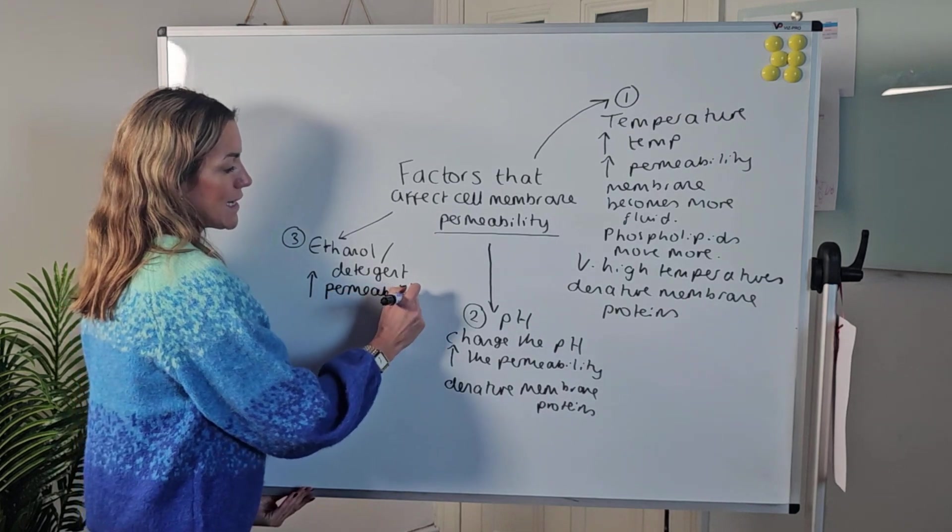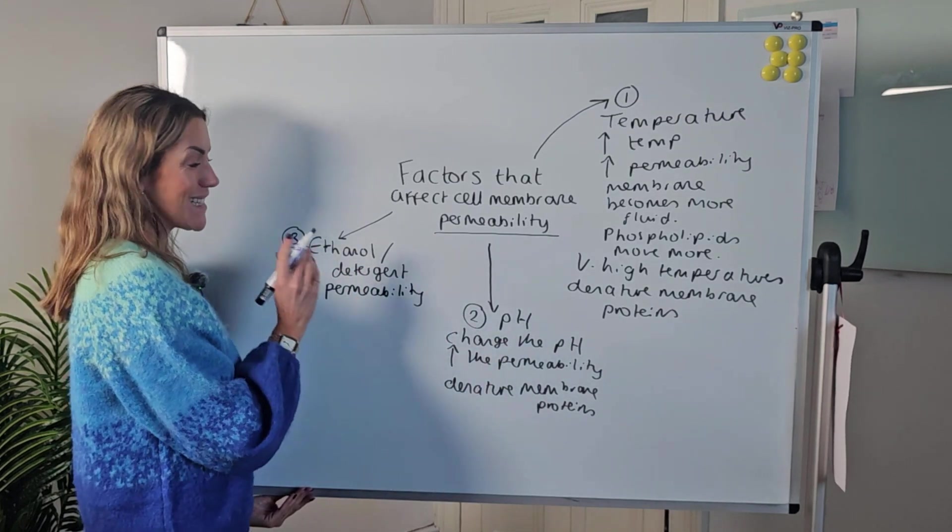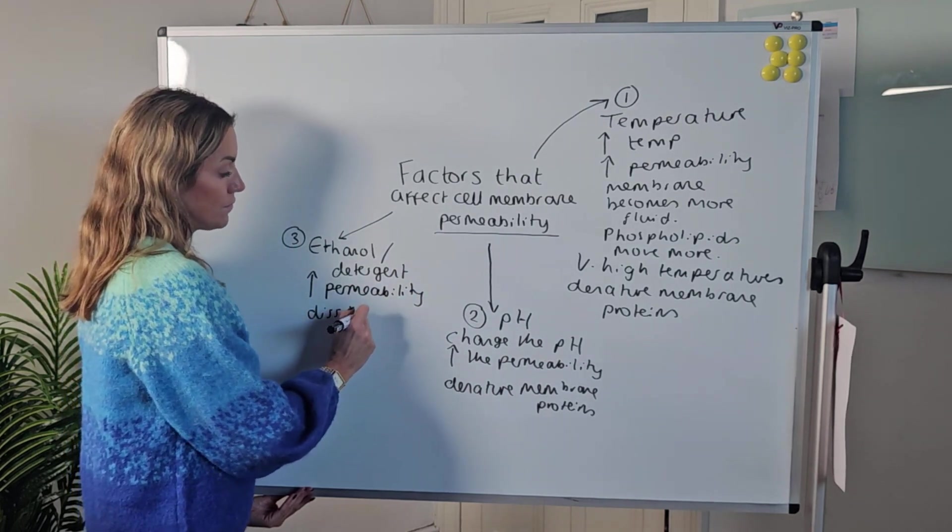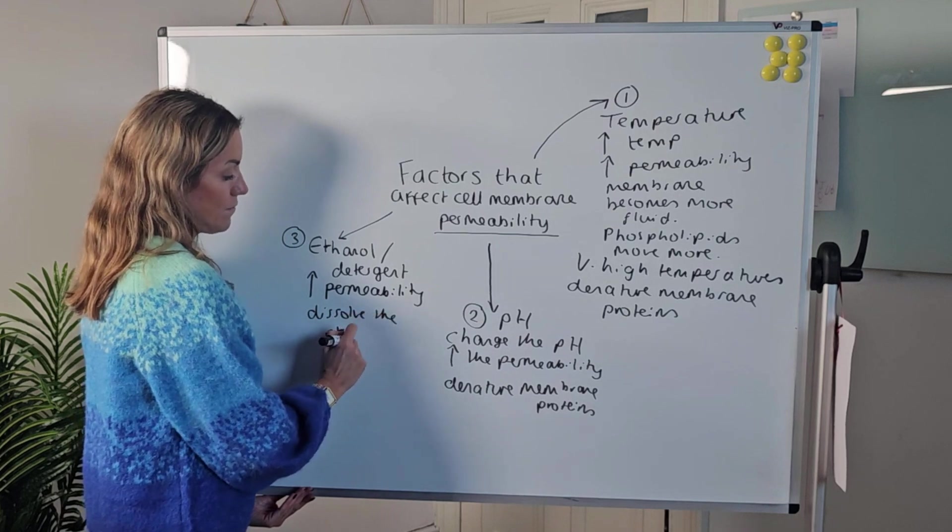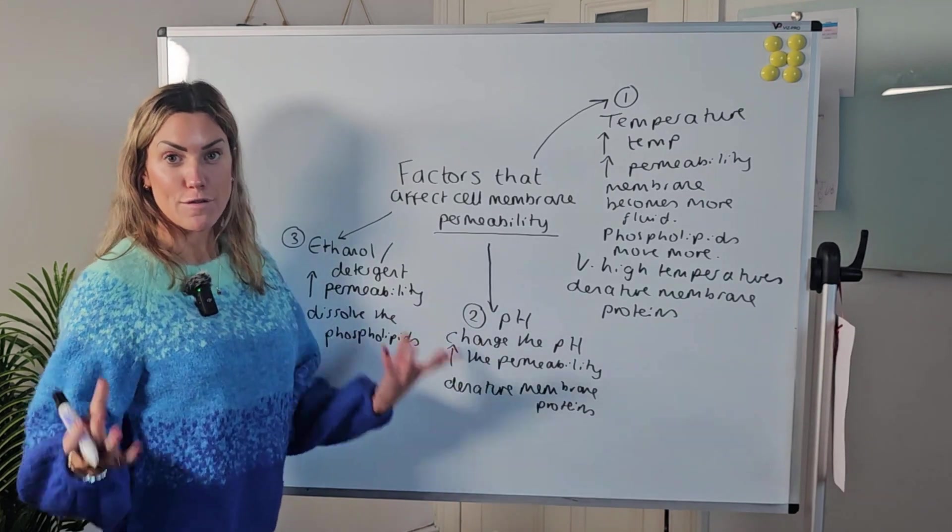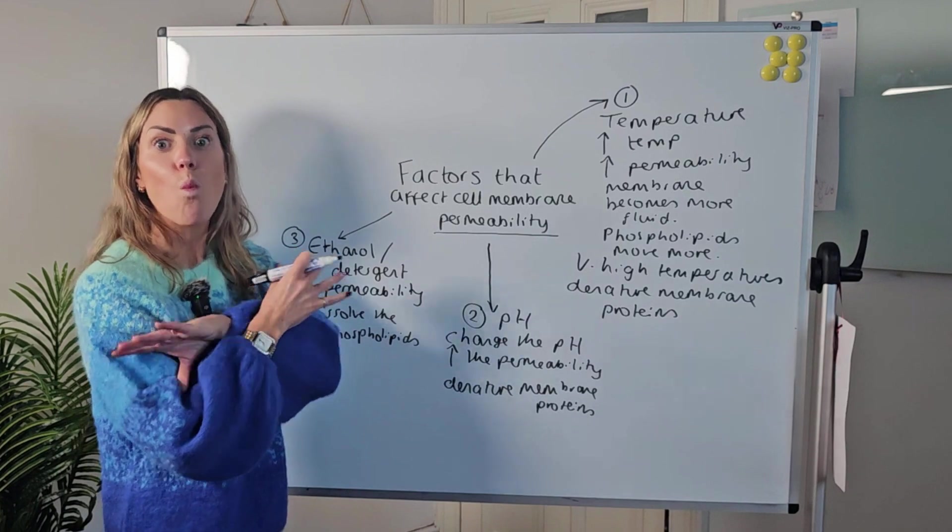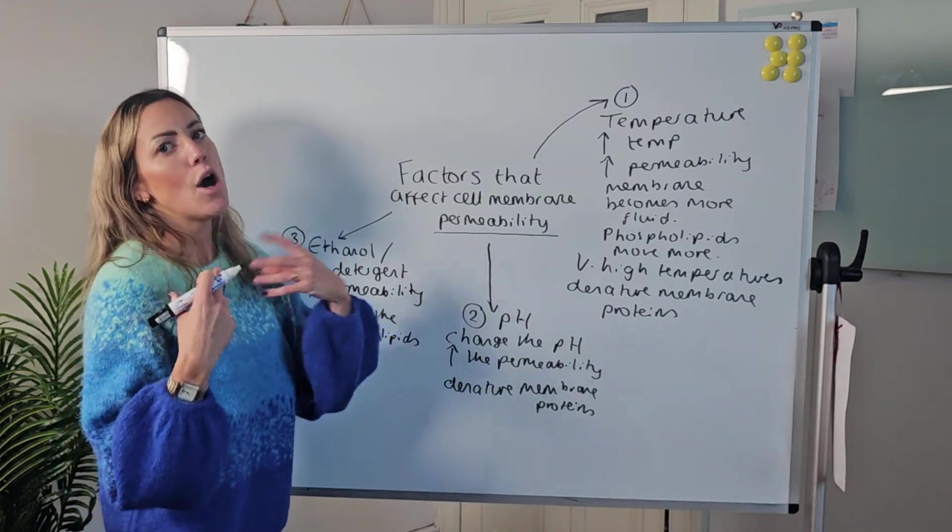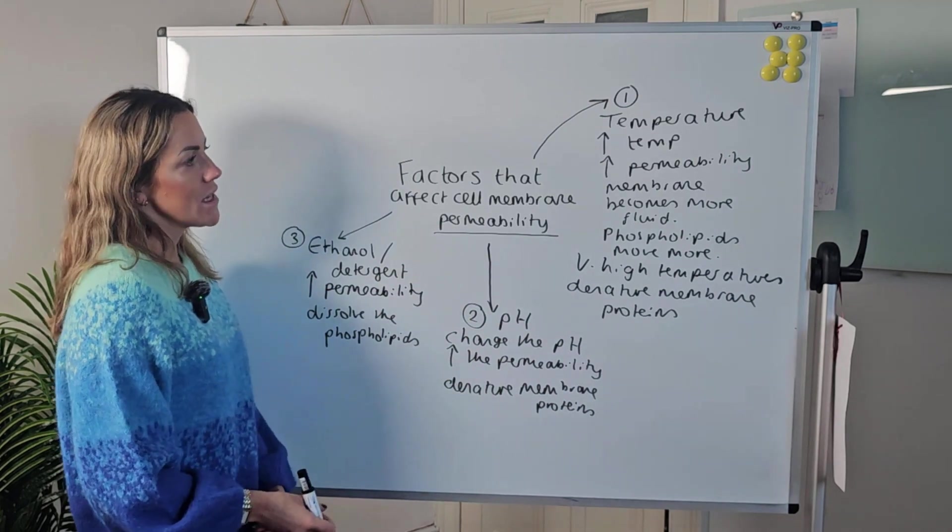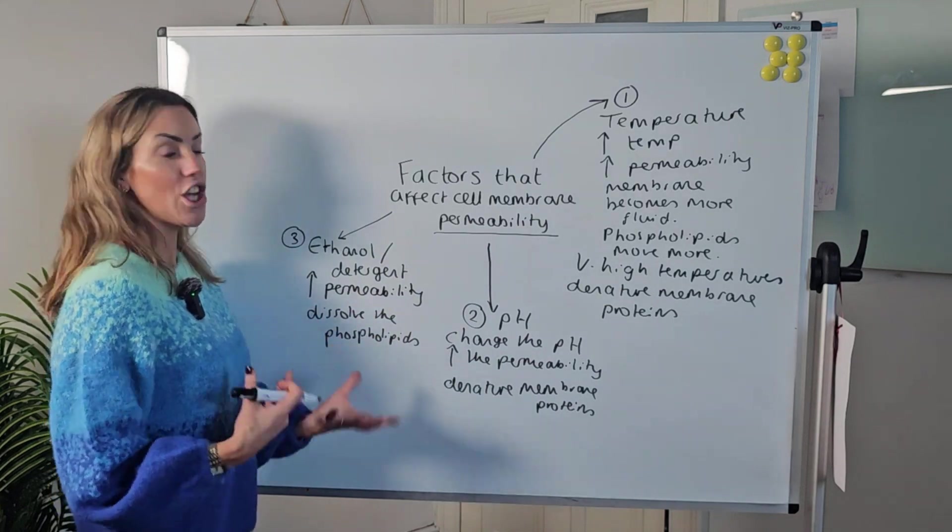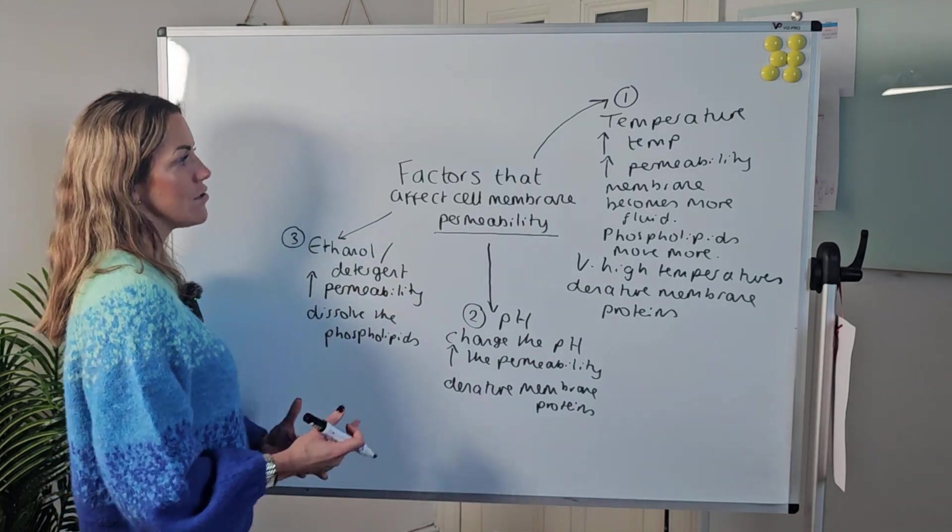This increases the permeability of the cell membrane because ethanol and other detergents dissolve the phospholipids. So you're damaging that phospholipid bilayer, you're dissolving the phospholipids, and it's going to be way more permeable. In the beetroot practical example, more pigment could leak out. So we've considered temperature, pH, and any kind of detergent or perhaps ethanol as a solution.